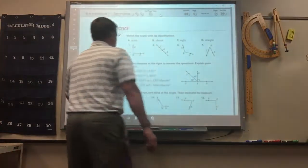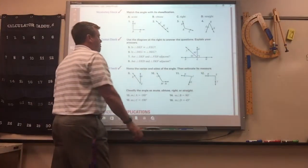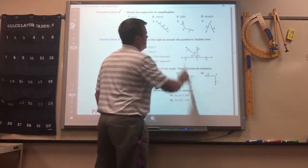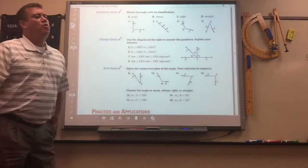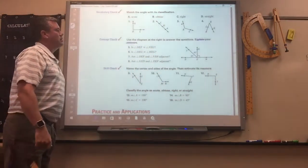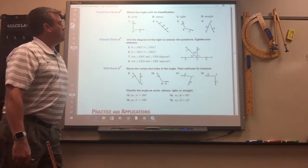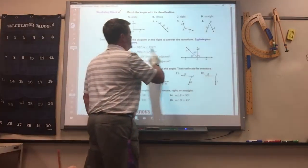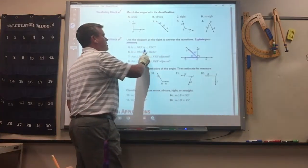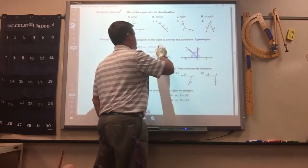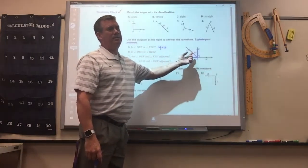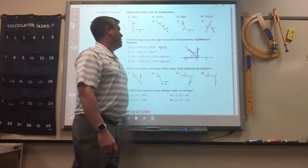All right, so for five through eight, we're going to use the diagram at the right, right there, to answer the questions. We don't need to explain them. So, for number five, is angle DEF congruent to FEG? Yes. If you had to explain it, you would say why. They're both 45. Both 45.